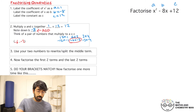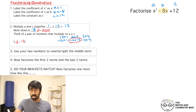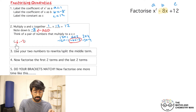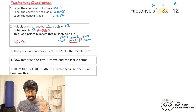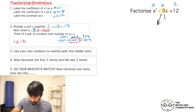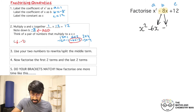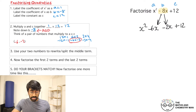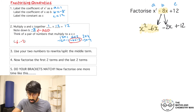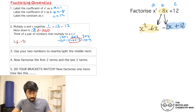We've got to select the one that adds up to make b, which is minus 8. That's going to be minus 6 and minus 2, because minus 6 plus minus 2 equals minus 8. Step two done. Now rewrite the middle term — it was minus 8x — and split it into minus 6x and minus 2x. So we'll have x squared, then minus 6x, then minus 2x, then plus 12.